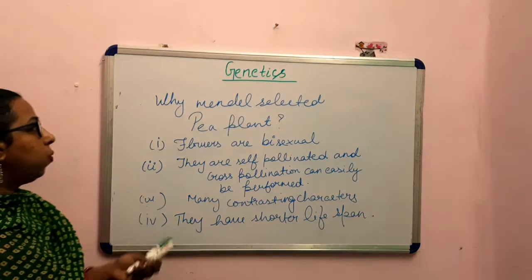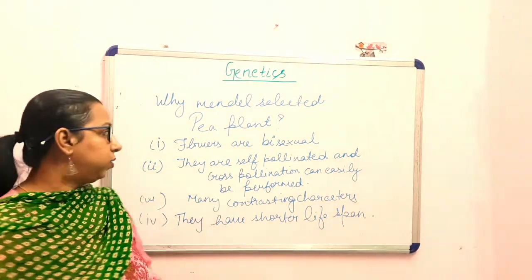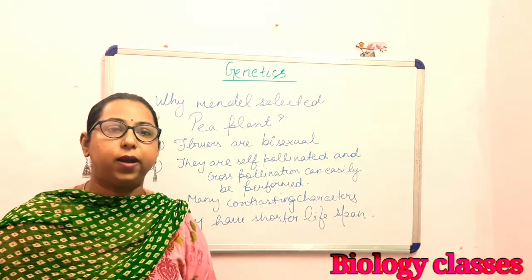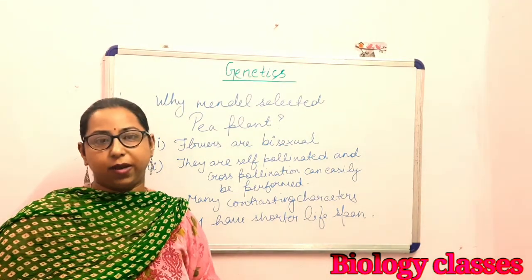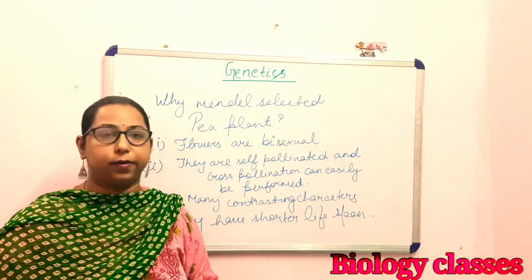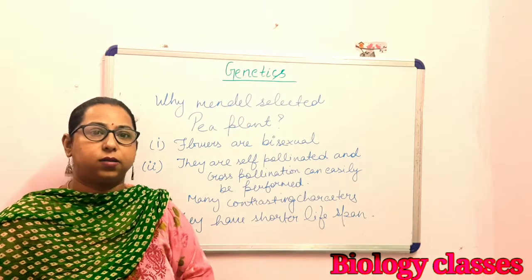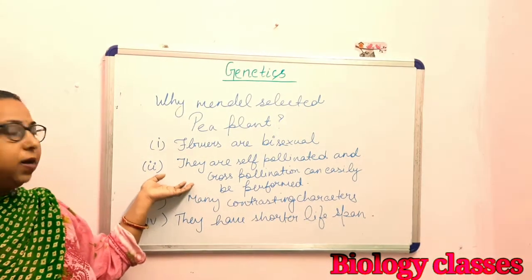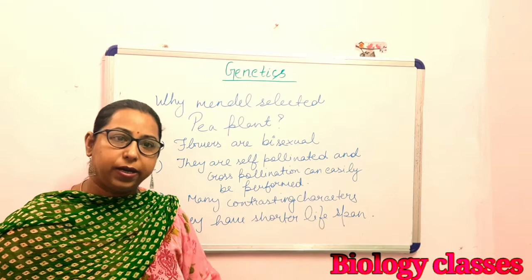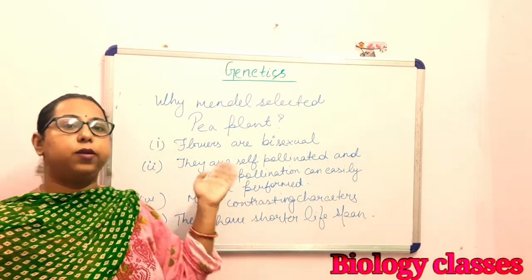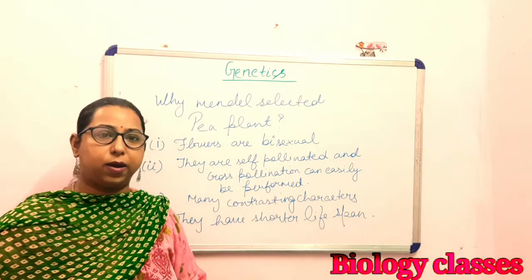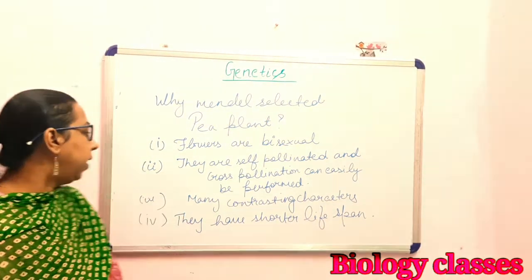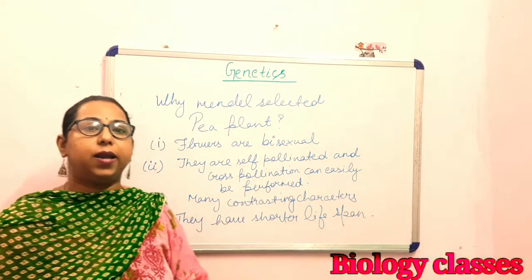While Mendel selected the pea plant, there are many reasons behind it. The first reason is that flowers are basically bisexual — male and female reproductive features are found in the same flower. This feature helps in self-pollination. Self-pollination can also be prevented by covering the reproductive structure, either the male or female part, allowing cross-pollination to be done.